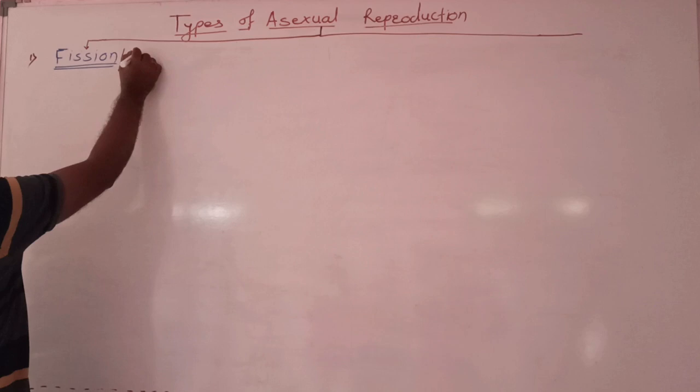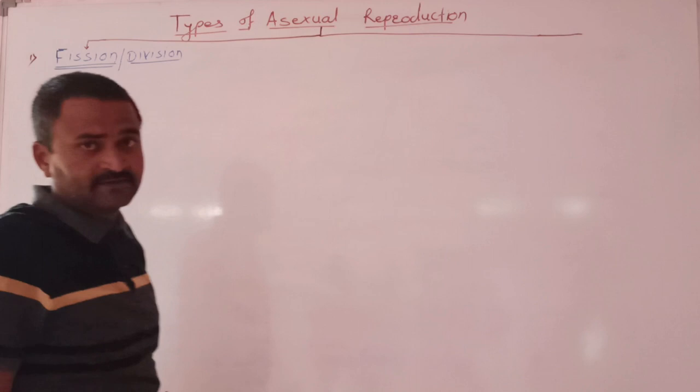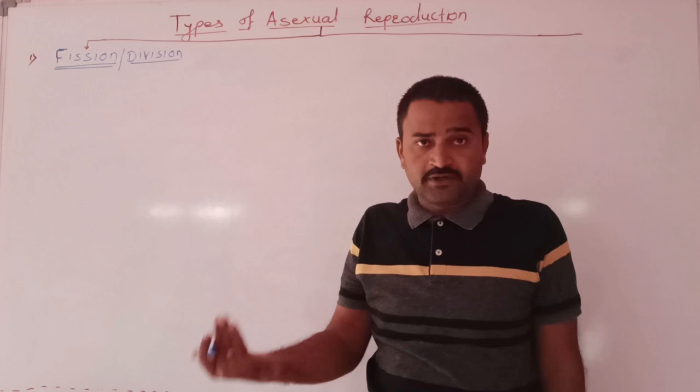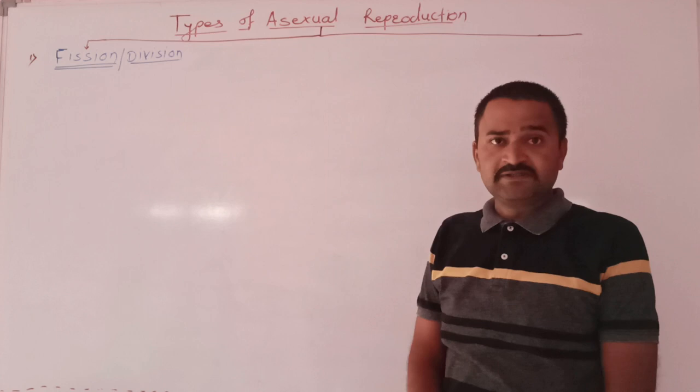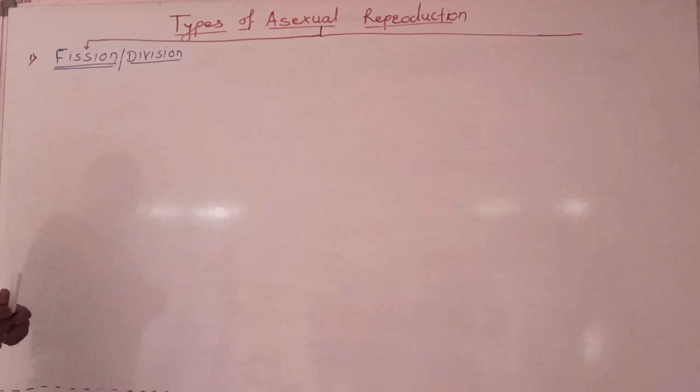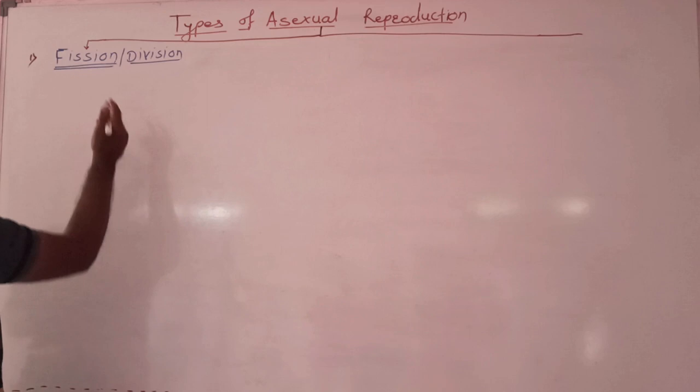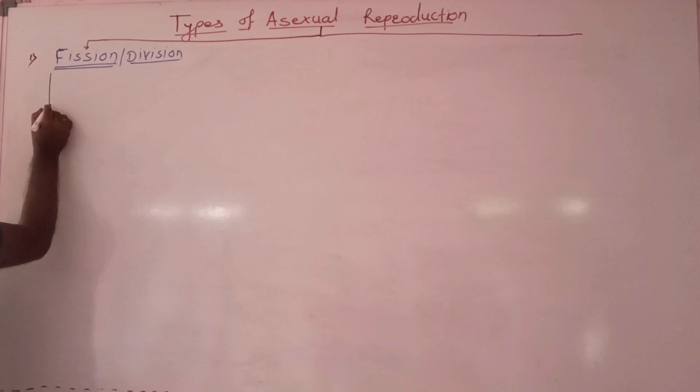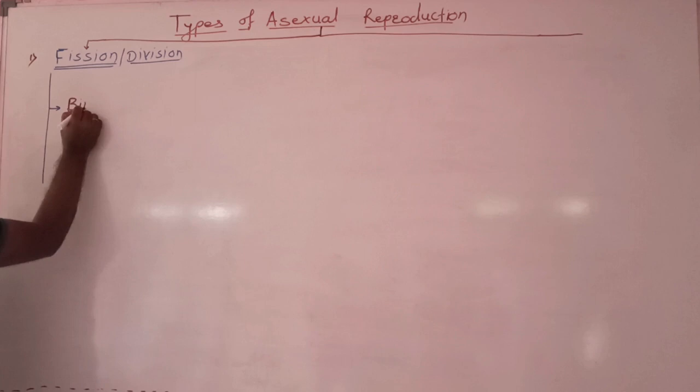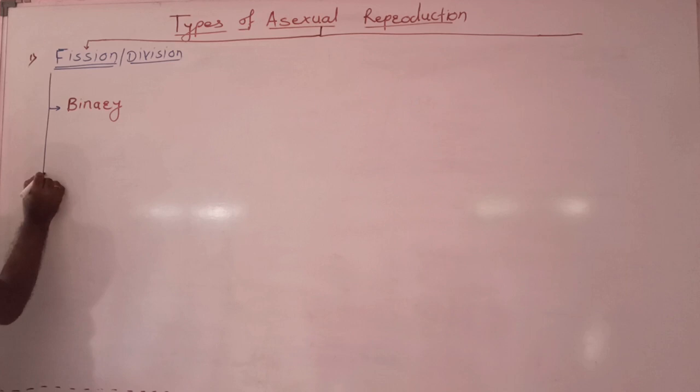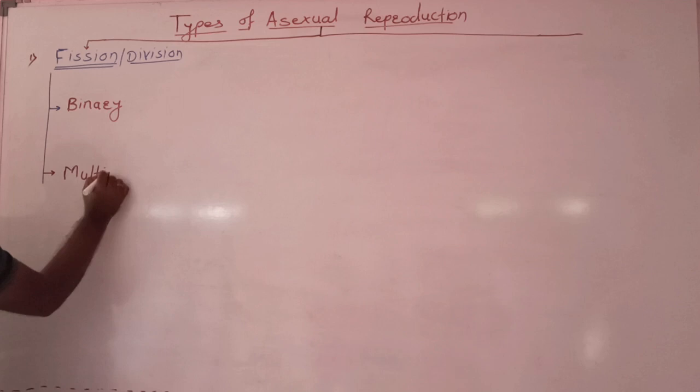Fission is called division. This type of reproduction is common among unicellular organisms. This fission type is asexual reproduction. Again, there are two types of fission. This type is called binary fission, and the second type is called multiple fission.